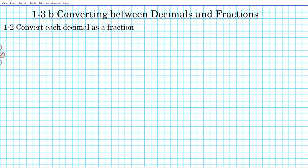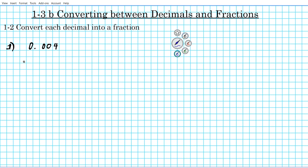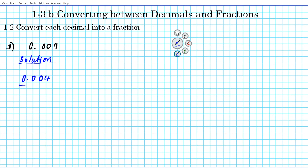Our instructions are to convert each decimal into a fraction. Question number one: we have the decimal 0.004. The task is to convert this decimal into a fraction — we can't just erase the decimal point. There are certain mathematical procedures we have to follow. We're going to get started by dividing this number by one.